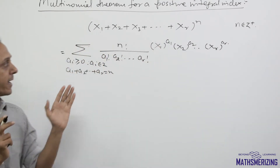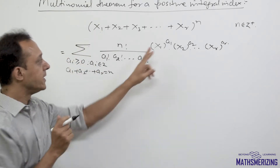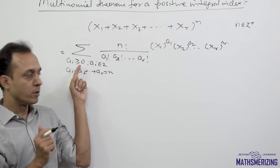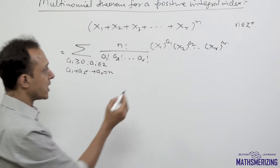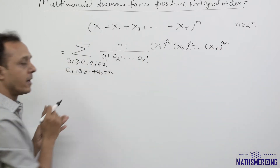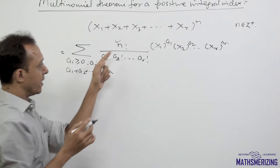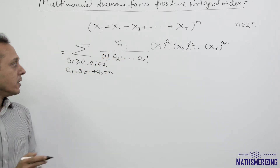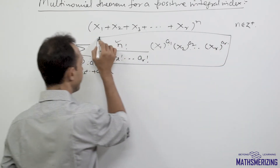When expanding x1 plus x2 plus xr to the power n, the first and foremost condition is that all powers a1, a2, and ar must be integers, zero or greater than zero. We are looking for positive integral index, and the sum of all these powers a1 plus a2 plus ar must equal n. The coefficient is given by n factorial upon a1 factorial times a2 factorial times ar factorial.